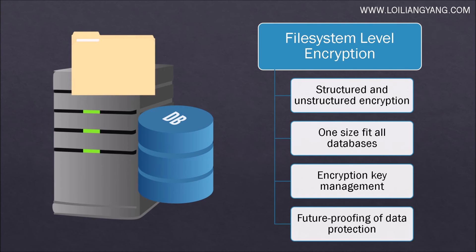Block-based level encryption from the file system level ensures greater and wider security posture. We cannot only encrypt the directory the database resides in — we can also encrypt other sensitive information like Word documents, PDF files, and the likes which are associated with the database.